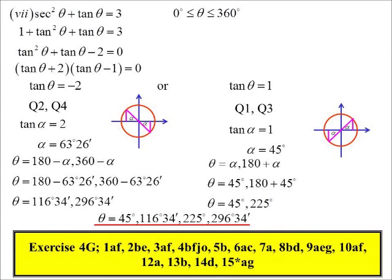Oh, actually that was the last example. So there we go. 4G, 1AF. Oh, 15's got an asterisk. That'll be a good one.